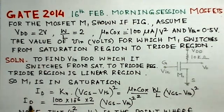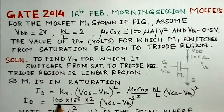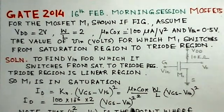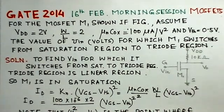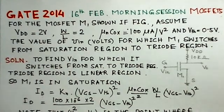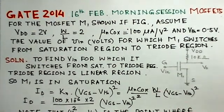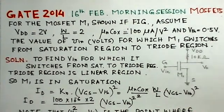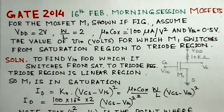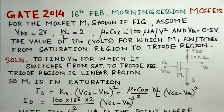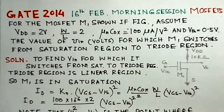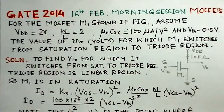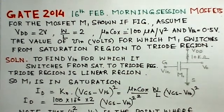So, we substitute the values. The value of ID, substituting the different parameters, we find this equation to be VGS minus V threshold square. Note here that although V threshold value is known, but this VGS minus V threshold is the value of the voltage which is a kind of breakpoint which determines the region of operation of the MOSFET.